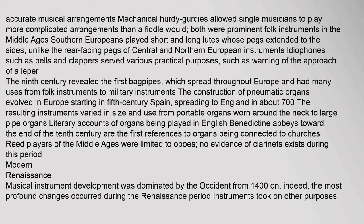The construction of pneumatic organs evolved in Europe starting in 5th century Spain, spreading to England in about 700. The resulting instruments varied in size and use from portable organs worn around the neck to large pipe organs. Literary accounts of organs being played in English Benedictine abbeys toward the end of the 10th century are the first references to organs being connected to churches. Reed players of the Middle Ages were limited to oboes; no evidence of clarinets exists during this period. Modern Renaissance musical instrument development was dominated by the Occident from 1400 on, and the most profound changes occurred during the Renaissance period.